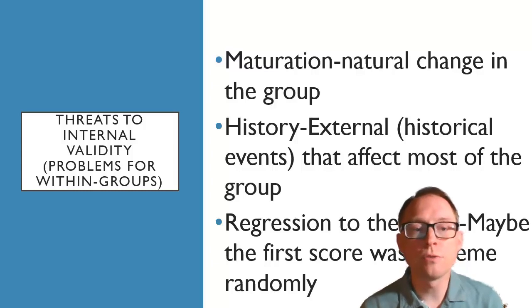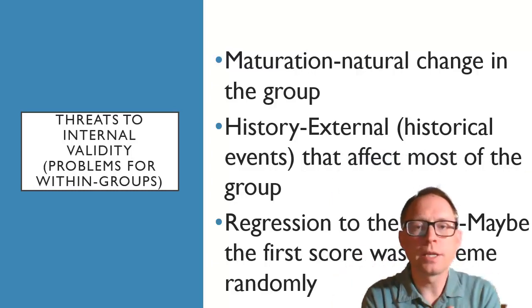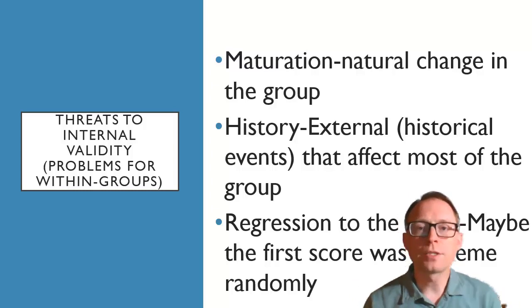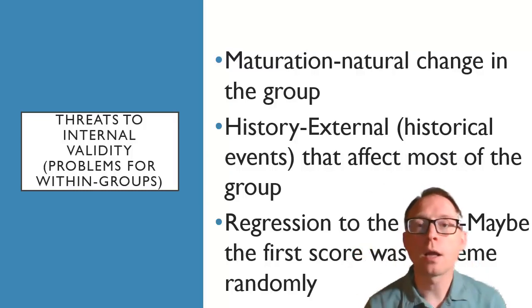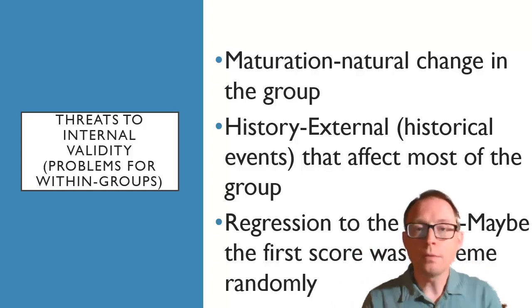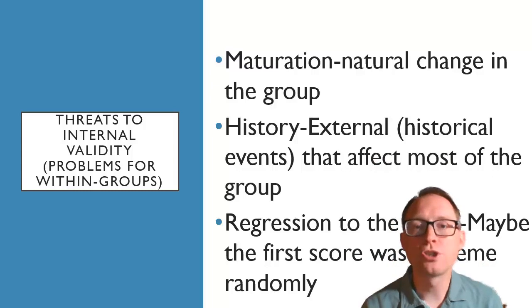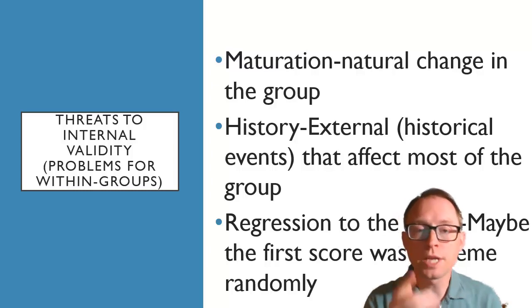These are threats to internal validity that specifically happen in within-groups designs — they happen when you repeat the measure. You can do this technically in a pre-test, post-test, but you're more likely to see it in a within-groups design, specifically one where you don't vary the order of presentation. These are things that can lead you to reject the null hypothesis when you shouldn't have. Let's think about our studying-makes-you-happier example. Measure happiness in January, assume they study during the semester, then measure happiness again right after the last final. Why would happiness change if it wasn't because of studying? That's the threat to internal validity. The first problem is maturation — a natural change in the group.